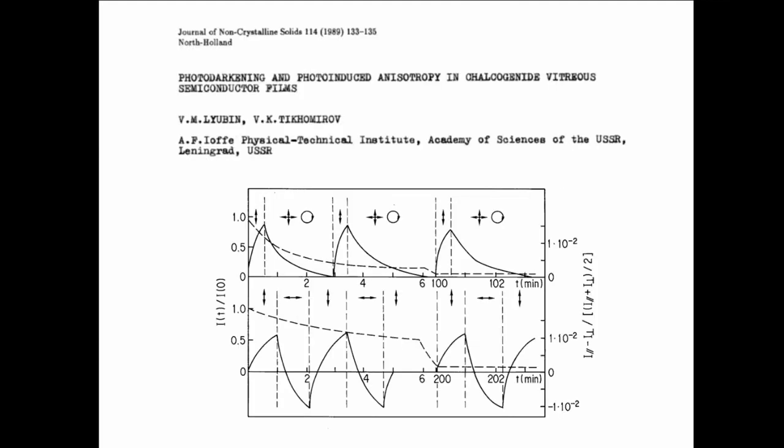The photodarkening dynamics are slow — on the scale of minutes — because it is a thermal process at room temperature where atoms must move. Interestingly, you can switch the anisotropy back and forth, but the photodarkening continues to change monotonically. So they are related but not exactly the same phenomenon.